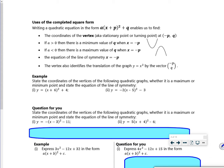So it's talking about what these numbers mean. It says a(x + p)² + q. So the vertex, right at the bottom or on top of it, the stationary point or turning point, is (-p, q).